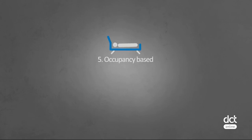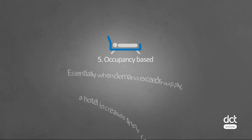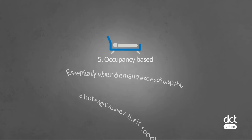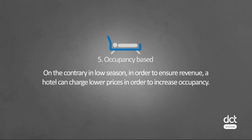Five, occupancy based. An occupancy based strategy works based on supply and demand. Essentially, when demand exceeds supply, a hotel increases their room rates. On the contrary, in a low season, in order to ensure revenue, a hotel can charge a lower price in order to increase occupancy.